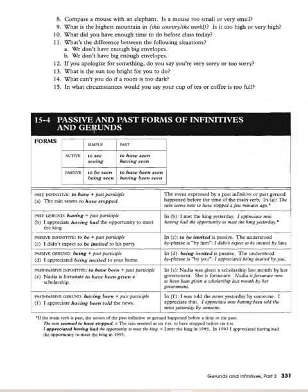Passive and past forms of infinitives and gerunds: Simple infinitive — 'to see'; past infinitive — 'to have seen'; simple gerund — 'seeing'; past gerund — 'having seen.' Passive infinitive — 'to be seen'; past passive infinitive — 'to have been seen'; passive gerund — 'being seen'; past passive gerund — 'having been seen.'